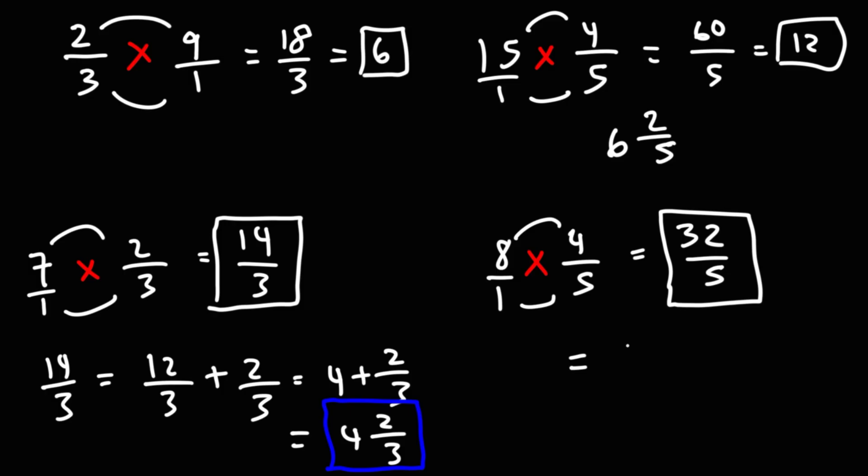Another way you could do that is you could break up 32 into 30 plus 2. 30 is the highest multiple of 5 just under 32. That's why I picked that number. 30 divided by 5 is 6. 6 plus 2 fifths is the same as 6 and 2 fifths.